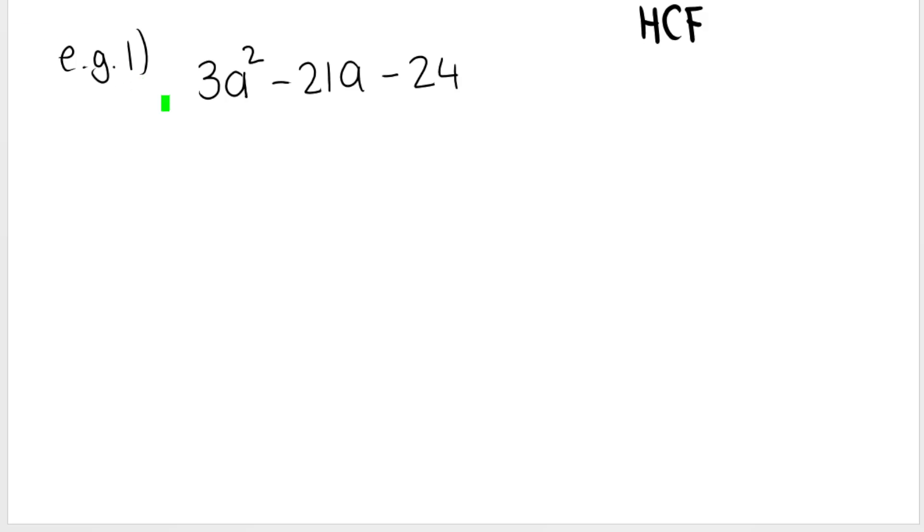It's very important that you always try to see if you can take out a highest common factor first. In this case, we've got three terms, 1, 2, 3, and 3 can divide into all three of these numbers. So I can take out 3 as my highest common factor. Then we open up what I call the leftover bracket, and we need to ask ourselves, what must I multiply 3 by in order to get this first term?